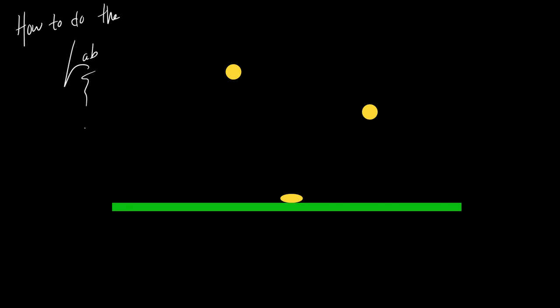All right, so let's start with the tennis ball one. It's the easiest one. I would encourage you to write things down that I'm not going to write down. The goal is for you to find the impulse experienced by the tennis ball.